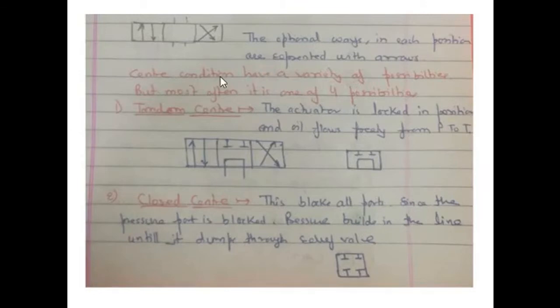Center condition has a variety of possibilities, but most often it is one of four possibilities. Number one is tandem center. The actuator is locked in a position and oil flows freely from port P to T. Here you can see the oil from port P, pressure port, is flowing back to tank port.